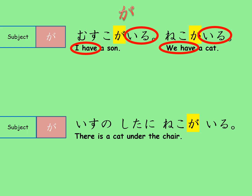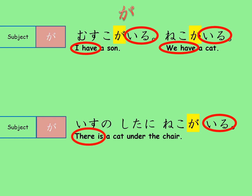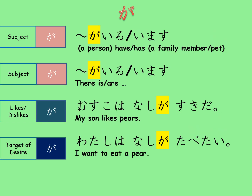The next sentence is similar: 'isu no shita ni neko ga iru,' which means 'there is a cat under the chair.' When the sentence starts with 'isu,' the focus is on isu — the chair — not on the cat. So for 'neko' we use the subject marker ga. In short, when we use the verb 'iru' or 'imasu' for English sentences starting with 'I have,' 'we have,' 'somebody has,' or when we want to say 'there is' or 'there are,' we use the subject marker ga. More accurately, ga marks the subject of the verb immediately after it. So ga is used with iru or imasu when the focus is not on the subject.